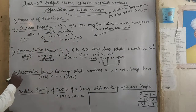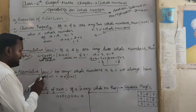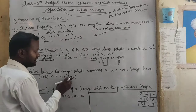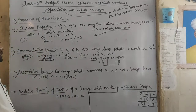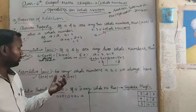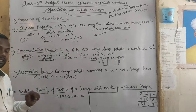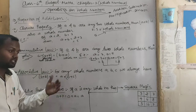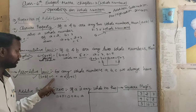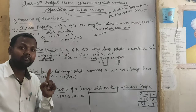Now come to the third property: Associative Law. For any whole numbers A, B, C, we always have (A plus B) plus C equals A plus (B plus C). It means if you have three whole numbers A, B, and C — when we add A and B first, then add C — or if we add B and C first, then add A — the result is exactly the same value.